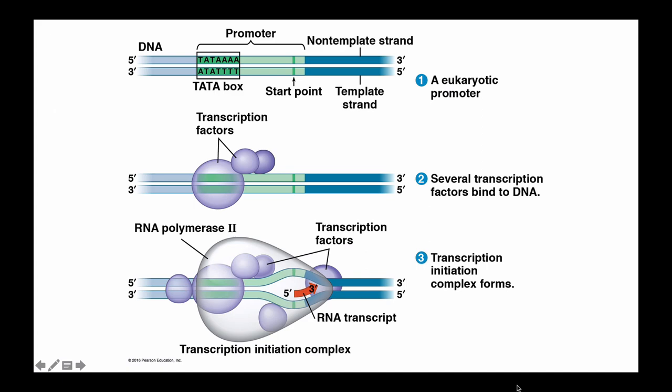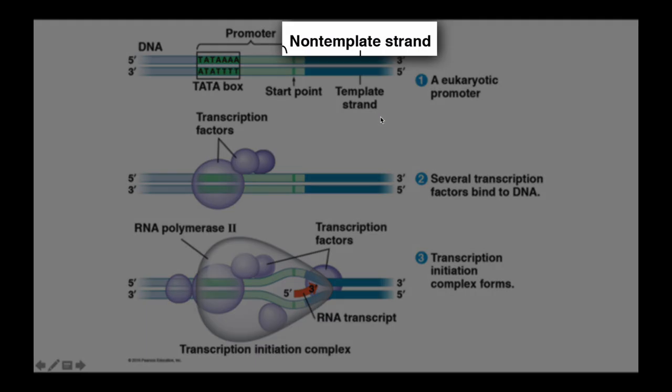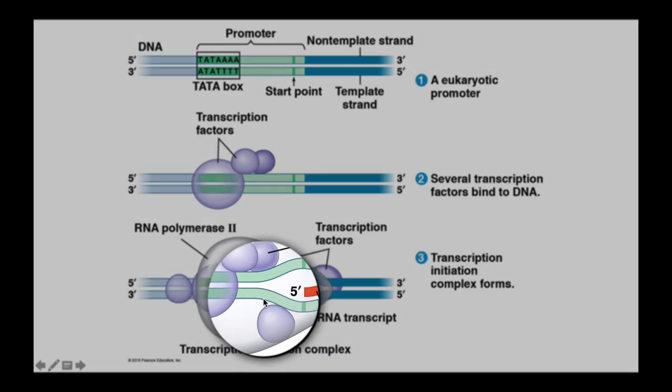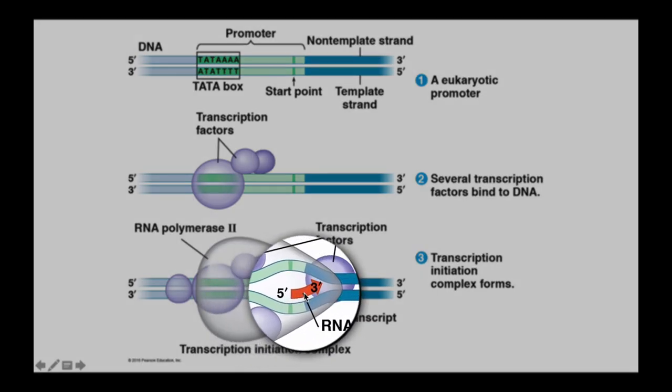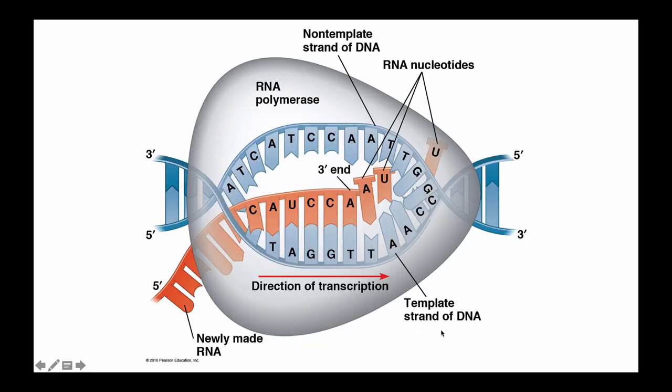Before we move along, I want to point out some important vocabulary not to be missed. Notice that one of the strands of DNA is called the template strand. The other one is called the non-template strand. Notice that the RNA polymerase, as it races down the DNA, it reads only one strand of the DNA, the template strand. This is called the template strand of the DNA. As it unwinds the DNA, it's only reading from one side of it, and the non-template strand of the DNA is just kind of hanging out on the sidelines.